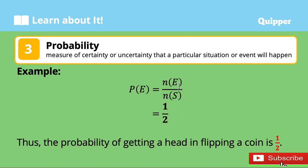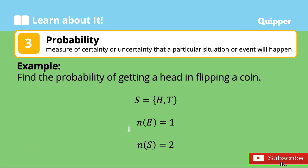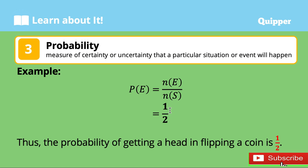There are two possible outcomes in the sample space, which corresponds to N(S) equal to 2. Using the formula for getting the probability of an event, we have N(E) divided by N(S), so N(E) is equal to 1 and N(S) is equal to 2. We substitute the values, and therefore the probability of getting a head in flipping a coin is one half.